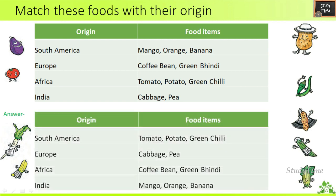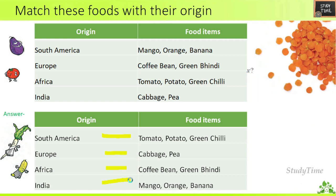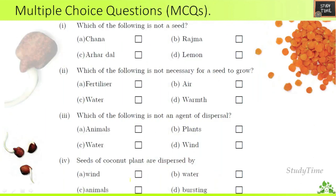The answers for matching foods with their origin are: South America — tomato, potato, green chili; Europe — cabbage, pea; Africa — coffee bean, green; India — mango, orange, banana.